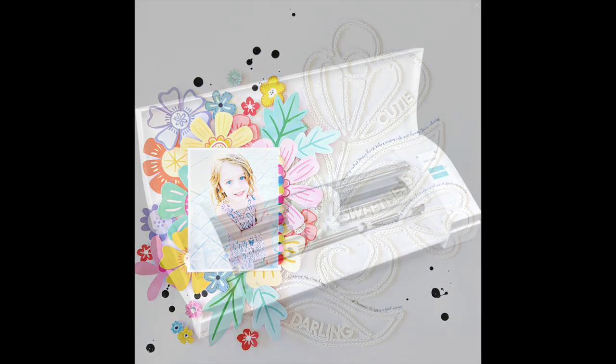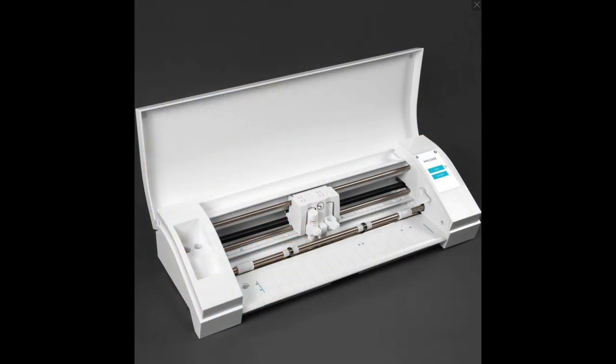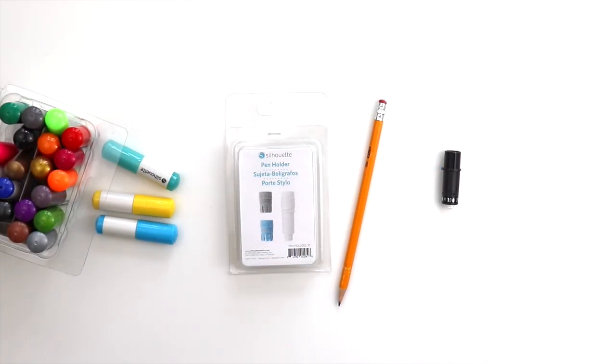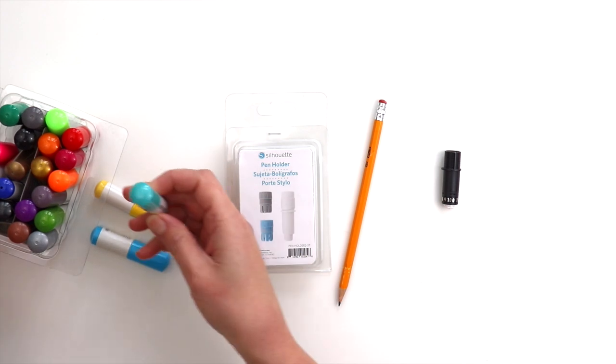In order to use these cut files, you need to have a Silhouette Cameo 3 with the two tool holders. One will be for the sketching part and one will be for the cutting part. So you need to have, in addition to the Silhouette Cameo 3, Silhouette sketch pens.